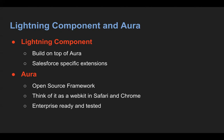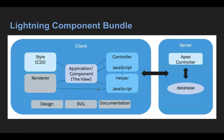There are two frameworks for building lightning components: Aura components and Lightning Web Components. Looking at the lightning component bundle available with Aura, it is divided into two parts: client and server. On the left-hand side, the client includes various files, and on the right-hand side, the server contains the Apex controller and database. Let's discuss the client-side files first — style, renderer, application, CSS, component, controller, helper, design, SVG, and documentation.